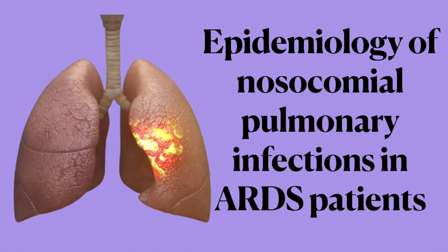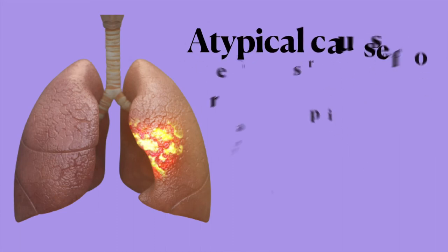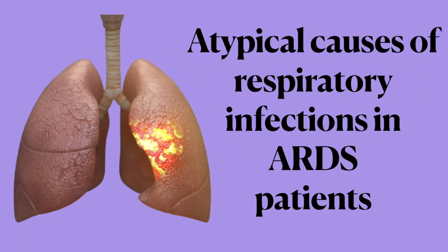Regarding the epidemiology of nosocomial pulmonary infection in ARDS: a study comparing ICU-acquired pneumonia with ARDS shows roughly similar bacterial profiles. The most common organisms include Pseudomonas, Staphylococcus aureus, and other Enterobacteriaceae.